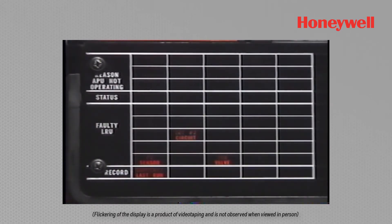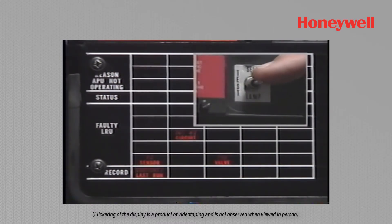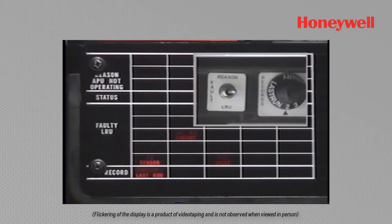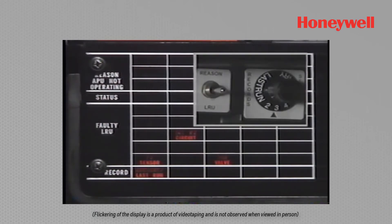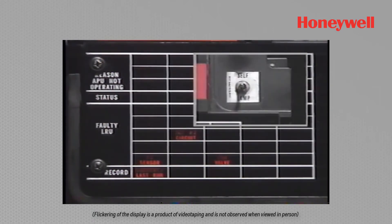Deactivating the continuous fault LRU display can be accomplished in three different ways: by pressing the toggle switch in the lamp test position, placing the fault switch to reason, or changing the record select switch. Self-test is inactive and will not affect the display.